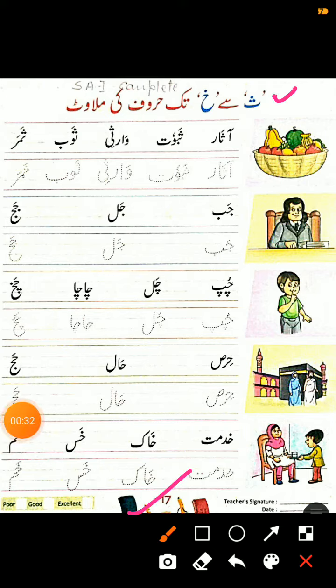Last Urdu writing class میں ہمنے الف سے ت تک حرف کی ملاوٹ کی tracing کی تھی۔ آج ہم کریں گے س سے خ تک حرف کی ملاوٹ کی tracing. (In the last Urdu writing class we did tracing of letter blending from alif to te; today we will do tracing of letter blending from se to khe.)